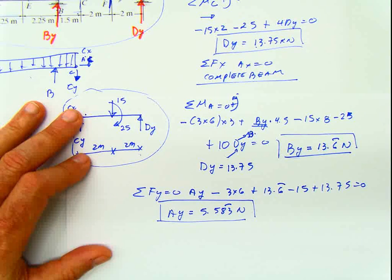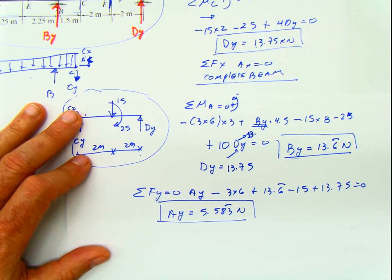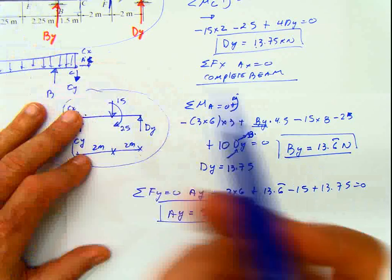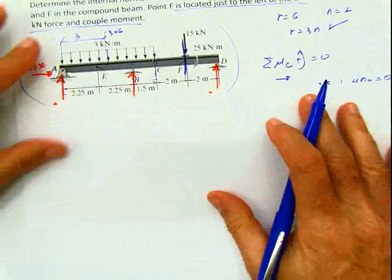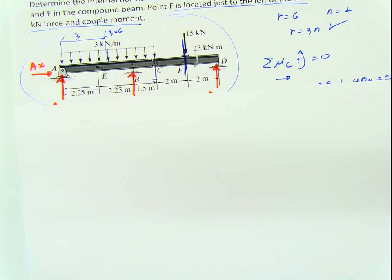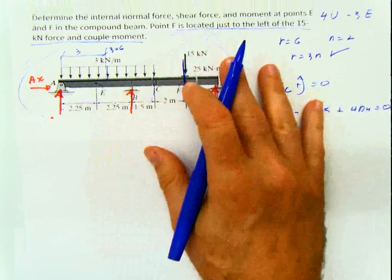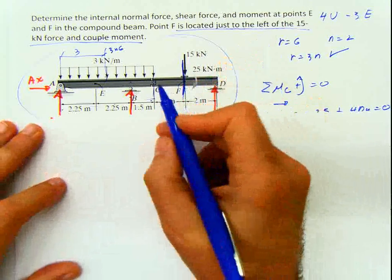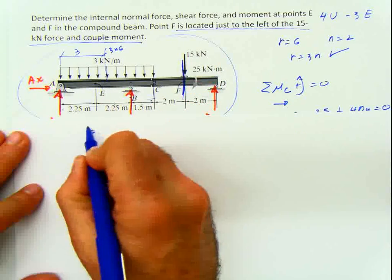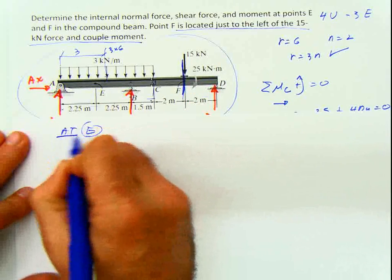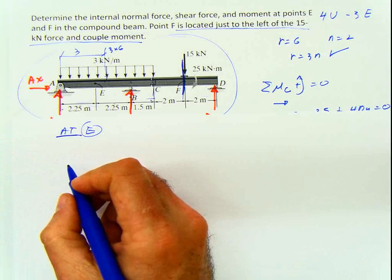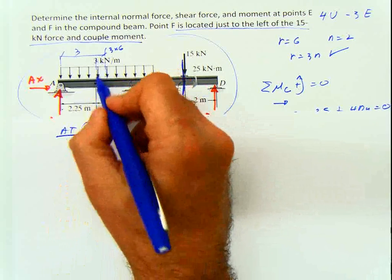Now that we have our reactions, we can continue the problem as a regular section calculation. We need to calculate the internal forces at point E and at point F. Let's start with point E. We make a section at point E.